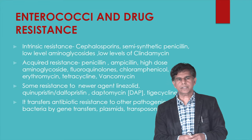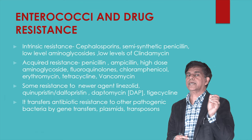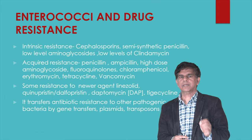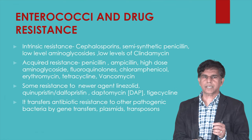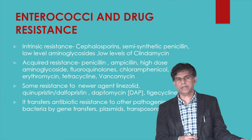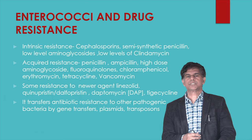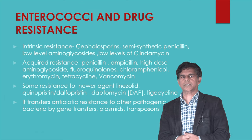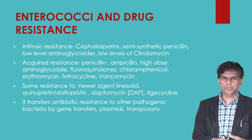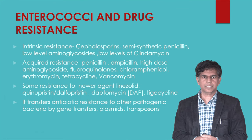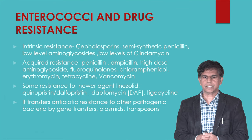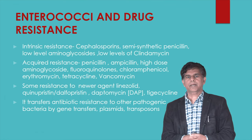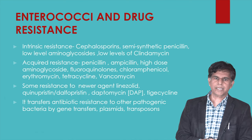There are two types of antibiotic resistance: intrinsic and acquired. Intrinsic resistance includes semi-synthetic penicillins and low levels of aminoglycosides and clindamycin. Acquired resistance includes penicillin, ampicillin, high-dose aminoglycosides, fluoroquinolones, chloramphenicol, erythromycin, tetracycline, and vancomycin, as well as resistance to newer agents like linezolid, quinupristin-dalfopristin, daptomycin, and tigecycline. Enterococci can also transfer antibiotic resistance to other pathogenic bacteria via gene transfer and plasmids.